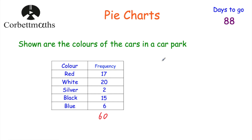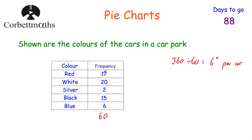Because a pie chart is 360 degrees, we do 360 divided by 60 — that equals 6. So each car is worth 6 degrees. To find each angle, we multiply each frequency by 6: red is 17 × 6, white is 20 × 6, and so on.